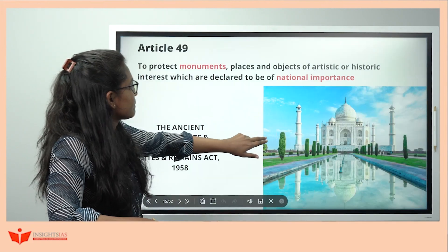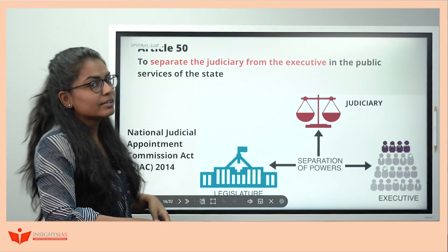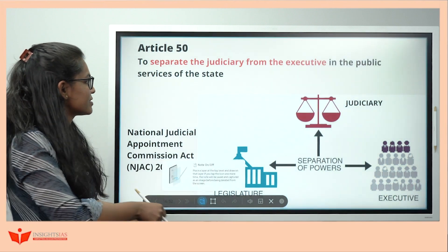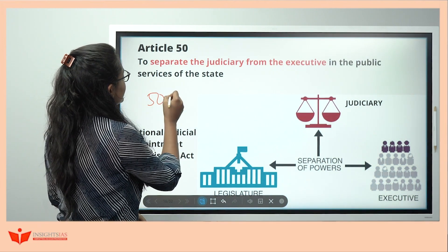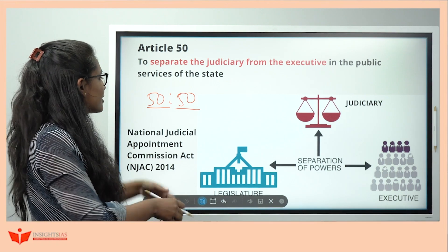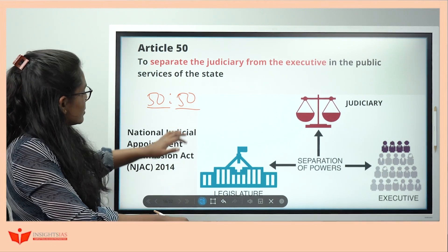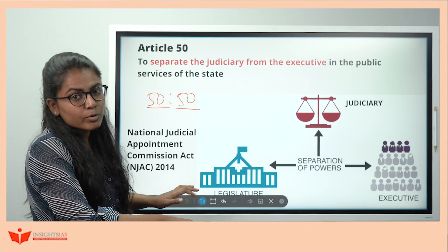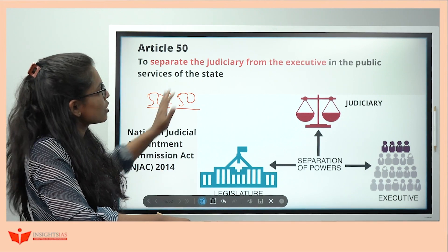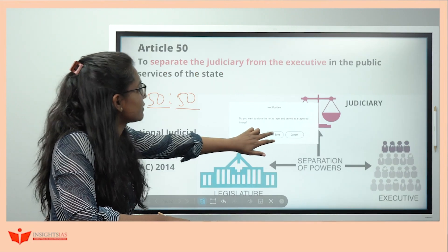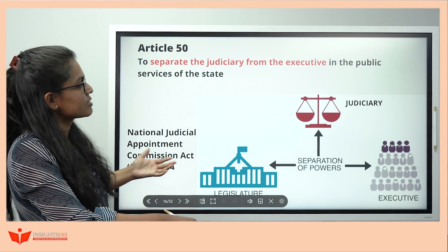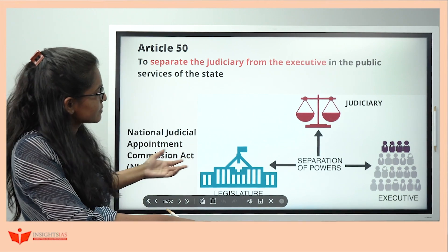Article 50 is quite easy — separate the judiciary from the executive. Remember it as 50-50: 50% judiciary, 50% executive — separate. That's why the Supreme Court struck down the NJAC in 2014, because it was not complying with this 50-50 separation of judiciary from executive.